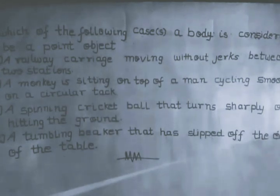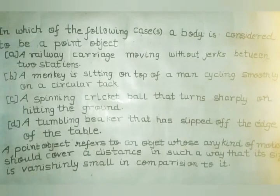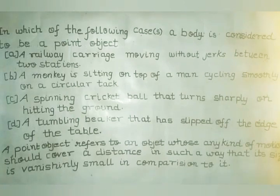I am writing a modified definition of a point object here. A point object refers to an object whose any kind of motion should cover a distance in such a way that its size is vanishingly small in comparison to it. I hope you liked the video and you had a new look at the concept of a point object.